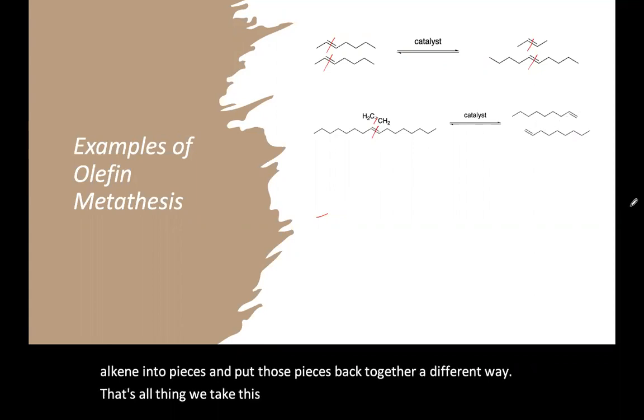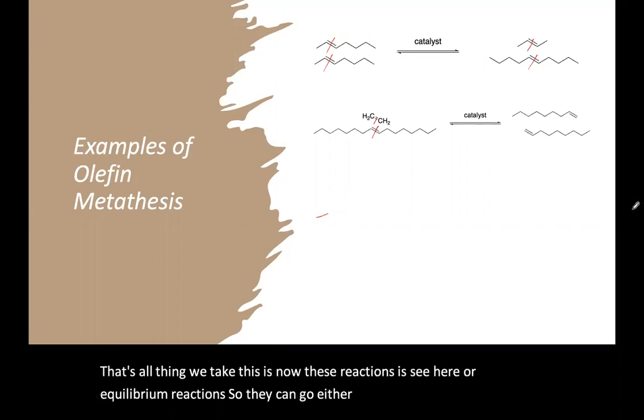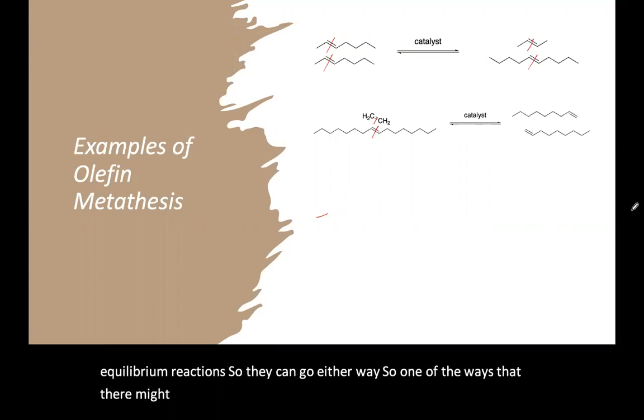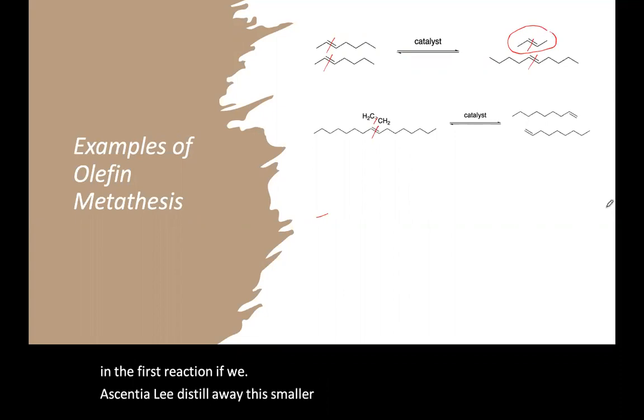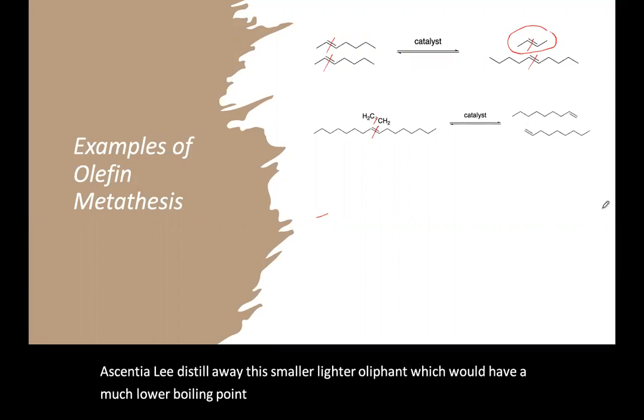Now these reactions, as you can see here, are equilibrium reactions. So they can go either way. So one of the ways that they might be controlled is through Le Chatelier's principle. So for instance, if in the first reaction, if we essentially distill away this smaller, lighter olefin, which should have a much lower boiling point, we can shift the reaction towards the right.